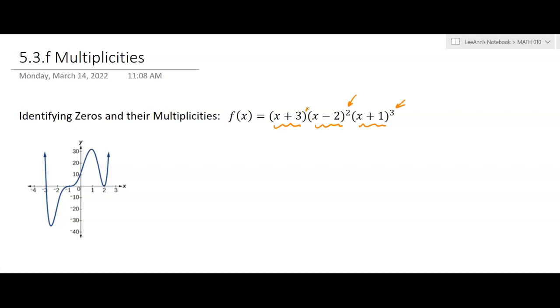But the multiplicities are going to be associated with the zeros that are associated with that factor. So you have zeros here, it's already factored. The zeros are negative 3, 2, and negative 1. We get that from the factors, right? Like that's what would make each factor 0.